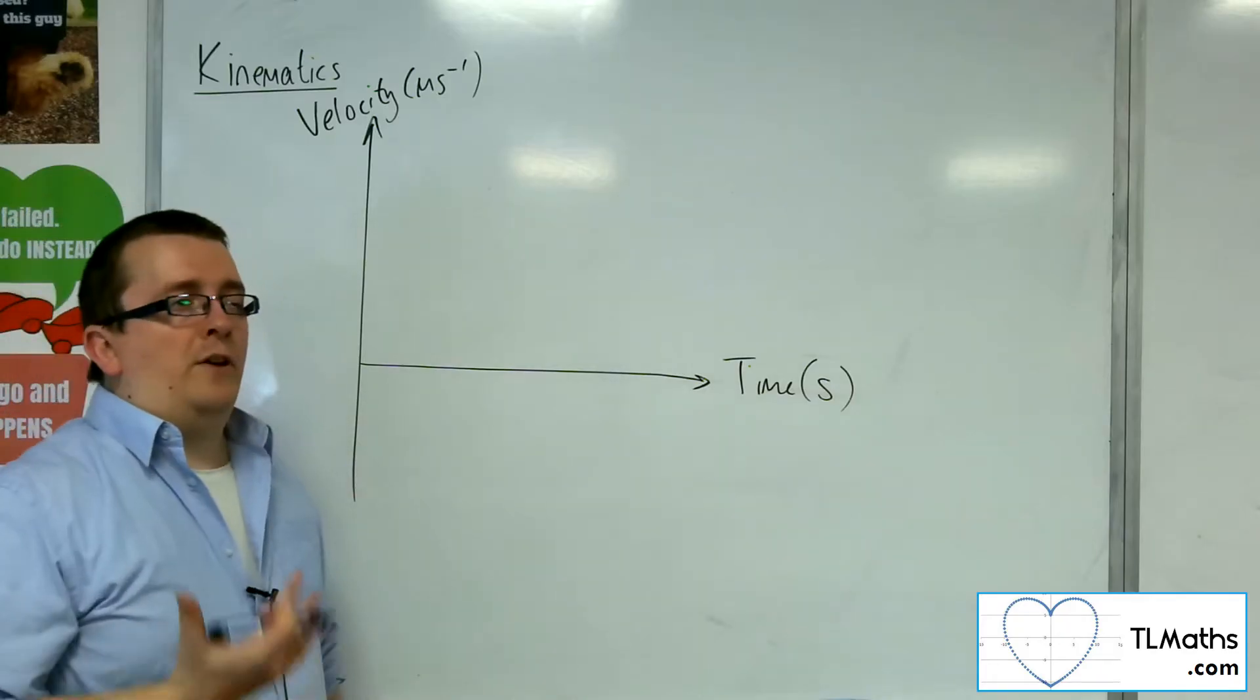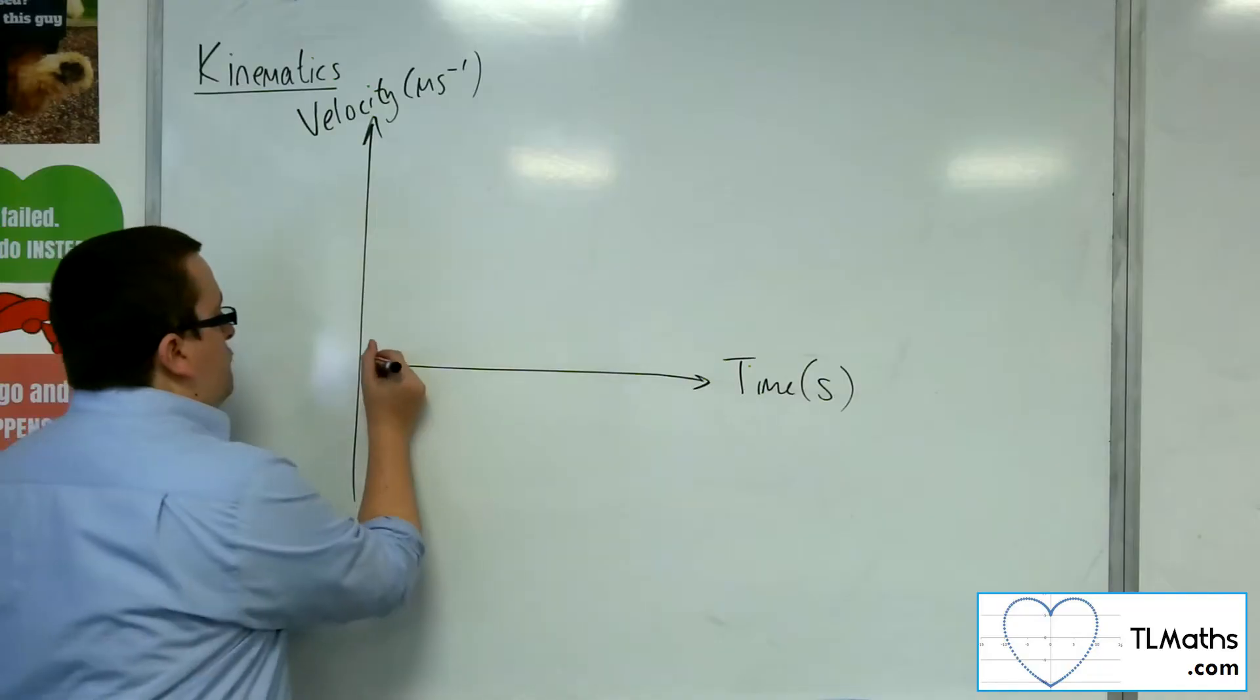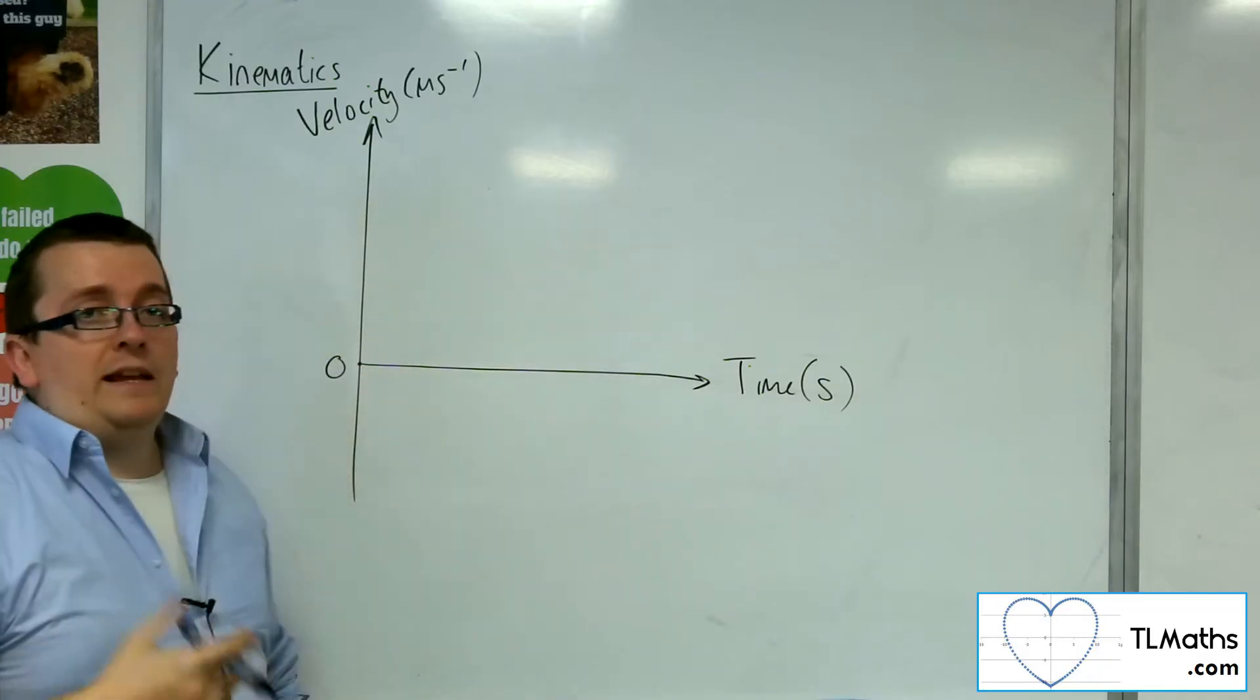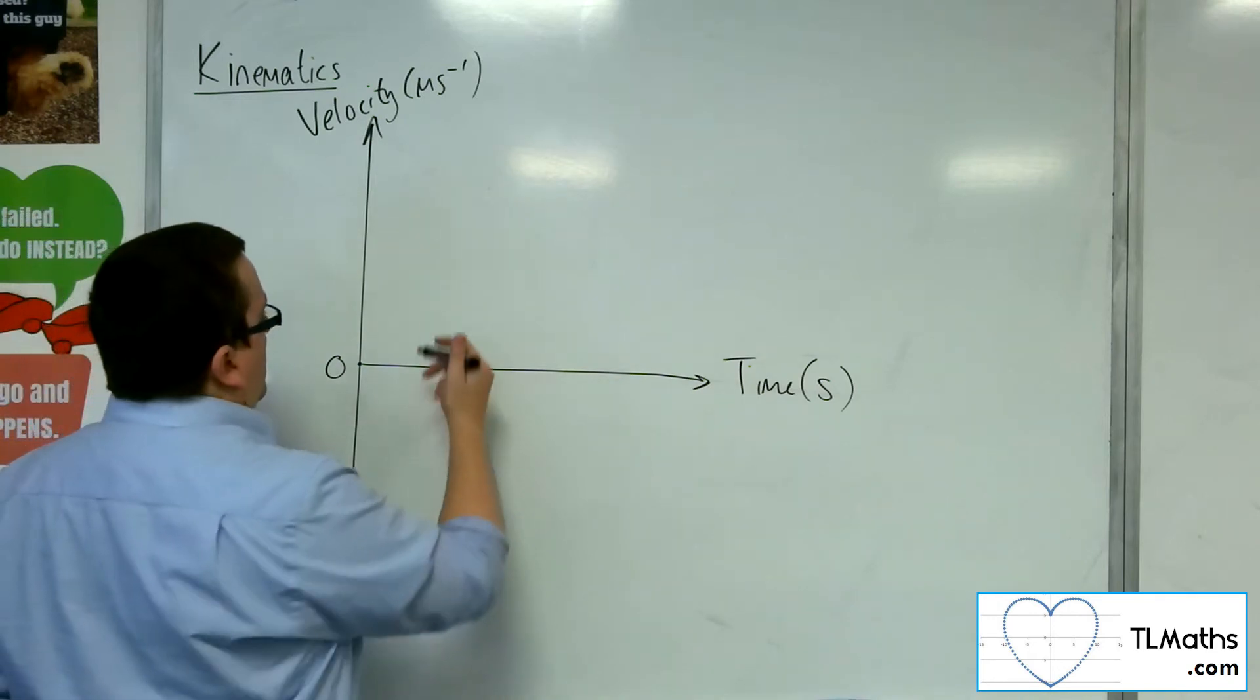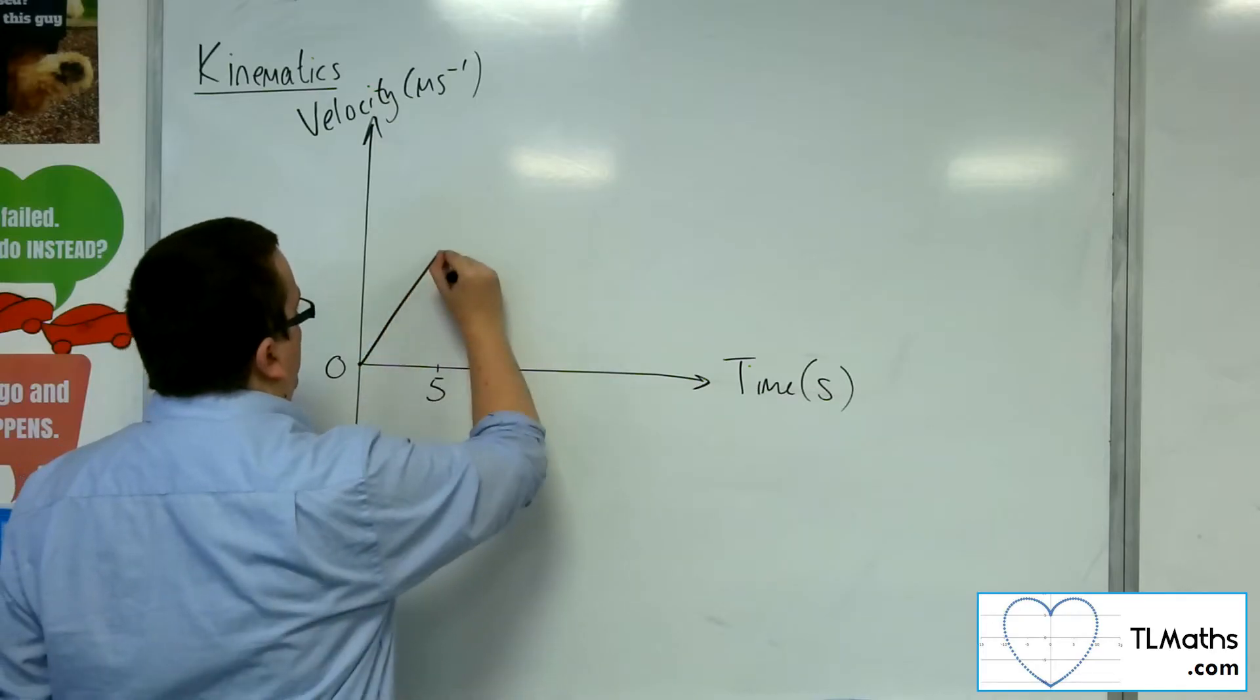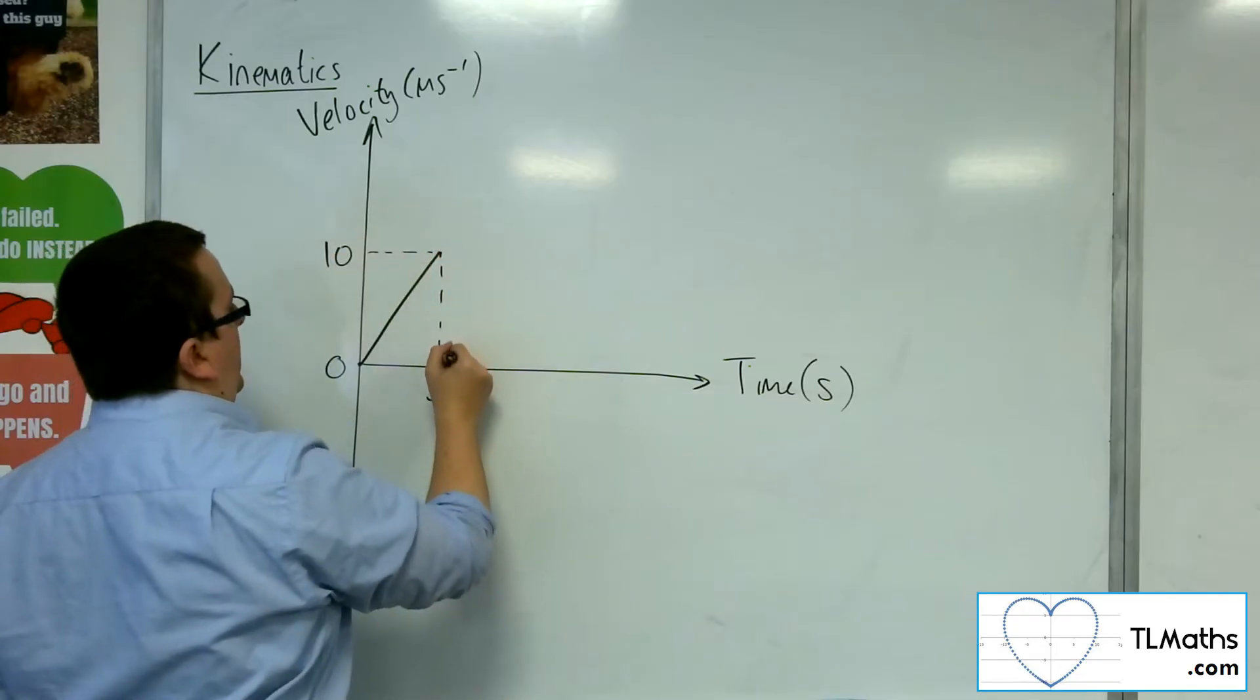And let's say we think about a particle that is moving in a straight line. It starts from rest. So at time zero, the velocity is zero. So initially, the particle is at rest. After five seconds, the velocity of the particle is 10 metres per second.